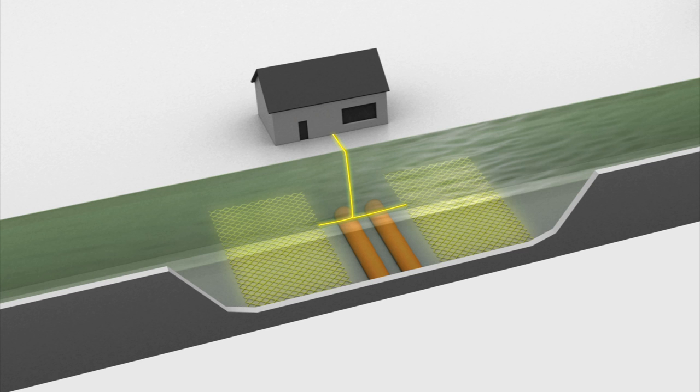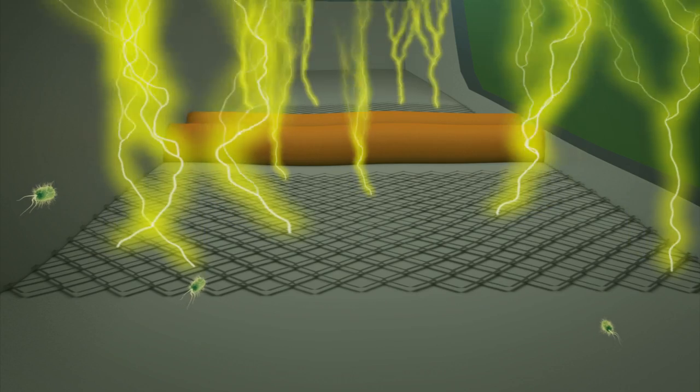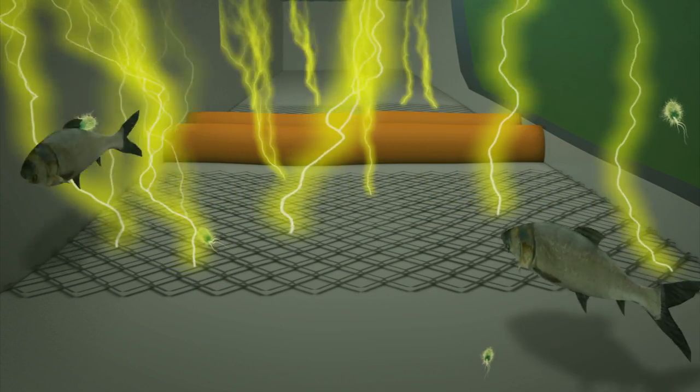Electrodes powered by a control house on shore create an electric field in the waterway, shocking and repelling incoming fish.